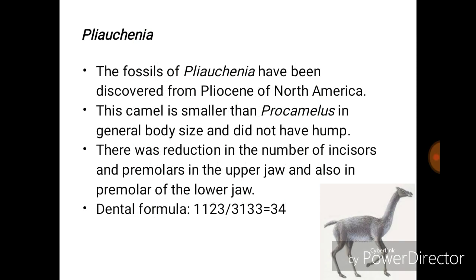The fossil of Poebrotherium was discovered from the Pliocene of North America. This camel is smaller than Procamelus and did not have a hump. There was a reduction in the number of incisors and premolars in the upper jaw and also in the premolars of the lower jaw, as seen in the dental formula.